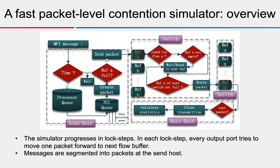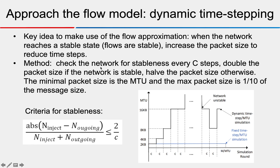Being a packet-level simulator, it can be very costly for large messages. Fortunately, our model can be approximated by the flow model. The key idea is that when the network reaches a stable state — meaning the flows are stable — we increase the packet size to reduce the time step. The concrete method is: check the network for stability every N steps, double the packet size if the network is stable, and halve the packet size if it is not. The minimum packet size is MTU and the maximum packet size is one-tenth of the message size.